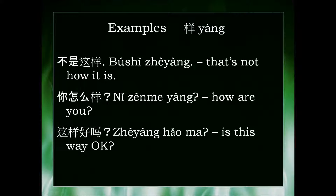And finally, 这样好吗? Going back to the woodworking example — I'm trying to correct my mistake and I ask the teacher 这样好吗? 这 means this, 这样 means this way or manner, and 好吗 means is it good? So it translates to 'is this good?' or 'is this way okay?' Thanks for watching, I hope these examples are helpful for you.